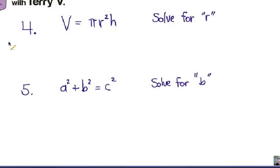The last two examples for this self-quiz actually come from different formulas that are used in the areas of math and physics. So you try number 4, solve for r, and number 5, solve for b.